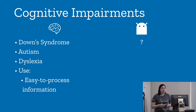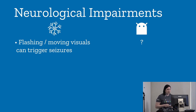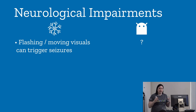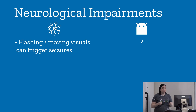Cognitive impairments include Down syndrome, autism, and dyslexia. Folks with these impairments use easy-to-process information, and there isn't much on Android yet to help — but perhaps soon. Neurological impairments include conditions where flashing or moving visuals trigger seizures. Folks with these disabilities use phone settings to reduce motion — something to keep in mind if you have animation as part of your app's storytelling.